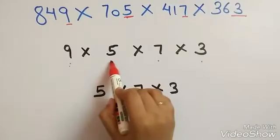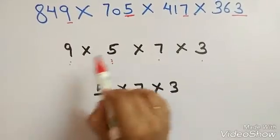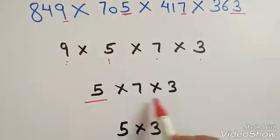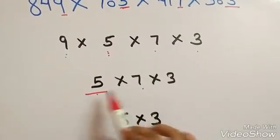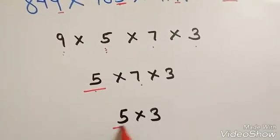First of all, multiply 9 into 5. 9 times 5 is 45, last digit is 5. Okay, now multiply 5 into 7. 5 times 7 is 35, and the last digit of 35 is 5.